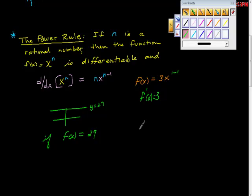Let's look at it this way. Let's call this 27x^0, because x^0 is 1. 0 times 27 is 0, and then x^(0-1) is x^(-1), but it doesn't matter because it's still going to be 0 times this is 0, so f'(x), the slope is 0.